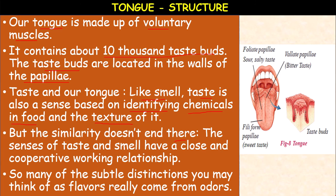You can see the structure of the tongue. There are different papillae placed in different positions — three positions. The vallate papillae sense the bitter taste. The foliate papillae are present at the sides of the tongue and detect sour and salty taste. The filiform papillae are present at the tip and help in sensing the sweet taste. If you take a single taste bud, the structure looks like this.